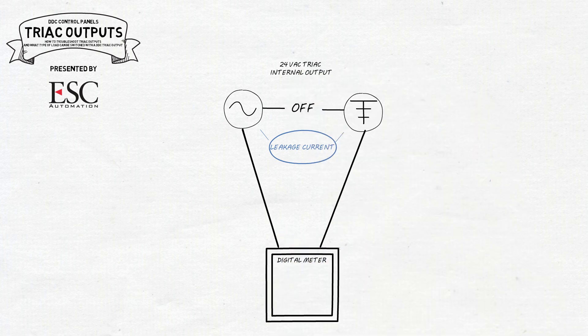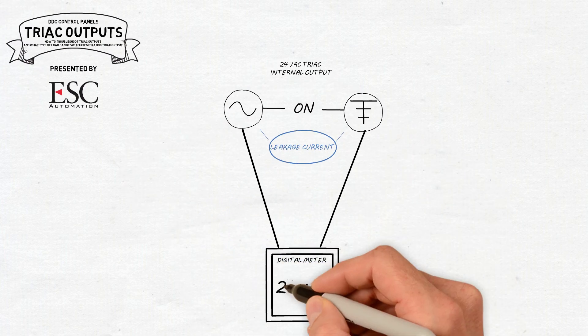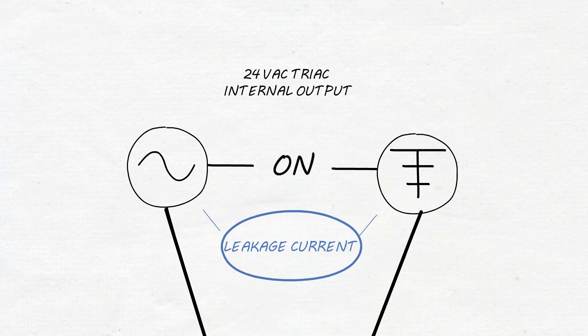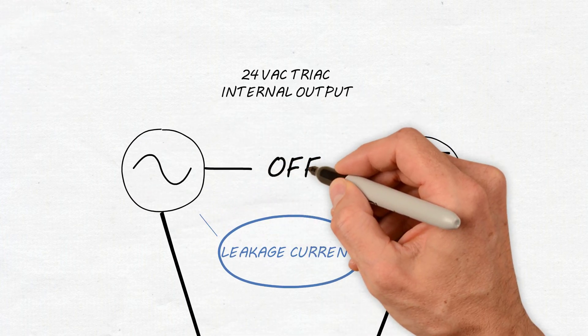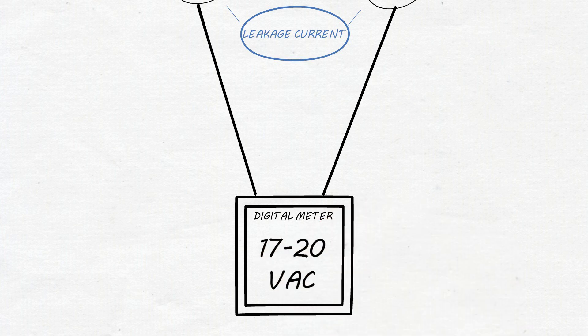If the meter is on the triac output and remains on, it will read zero when the output is off. Once the output is turned on, it will read 24 volt AC. If the meter remains on the output and the output is shut off, the meter will maintain the circuit and read a voltage somewhere between 17 and 20 volts, depending on the meter.